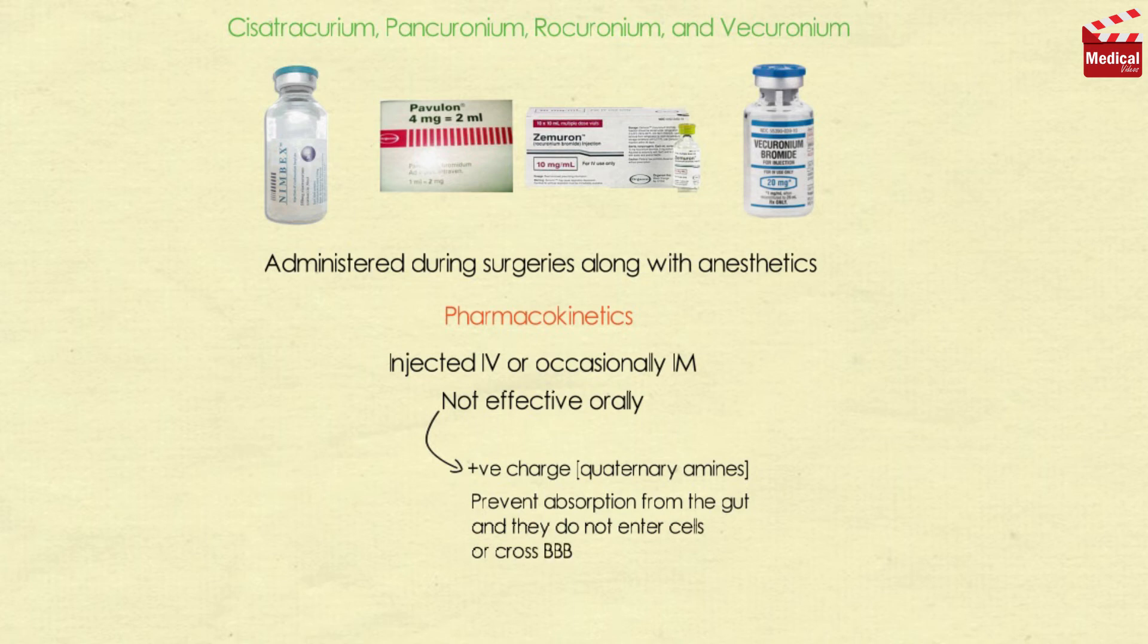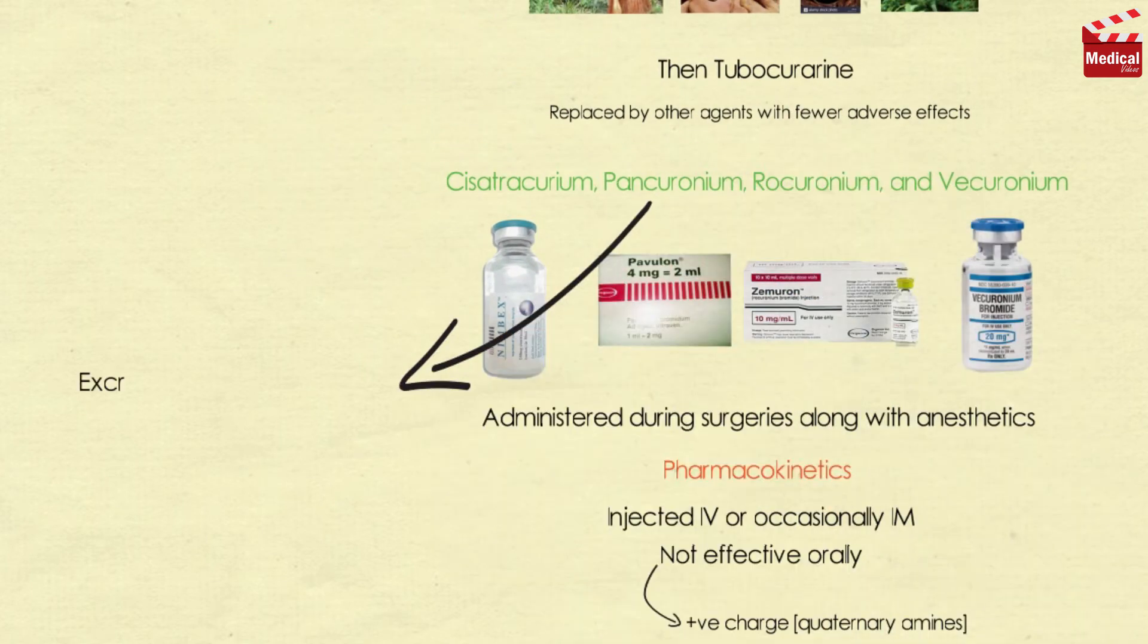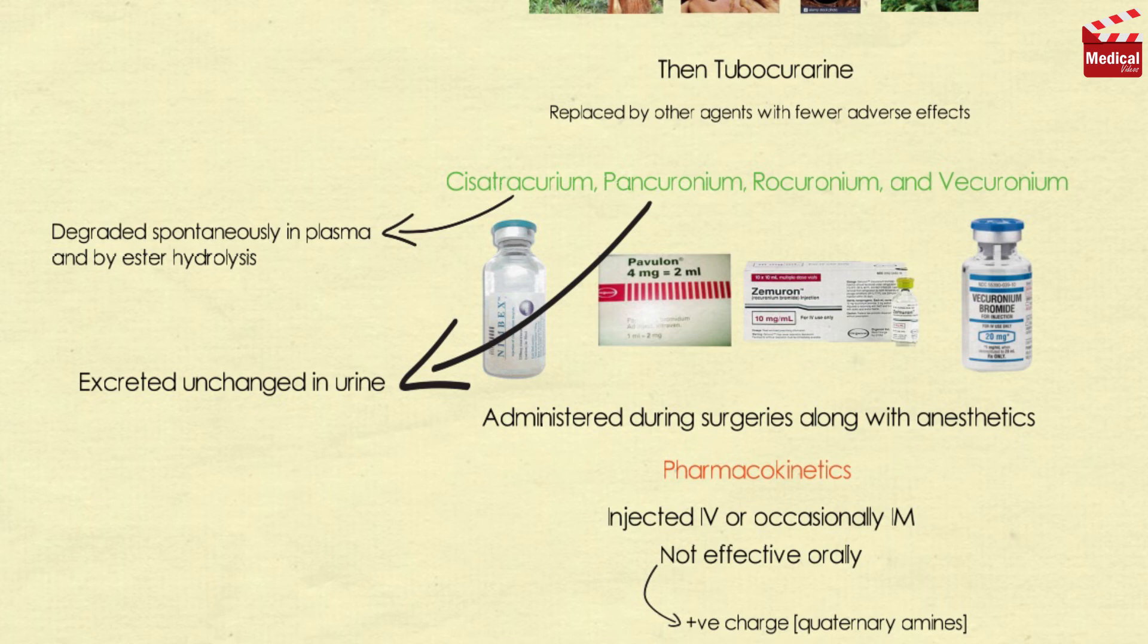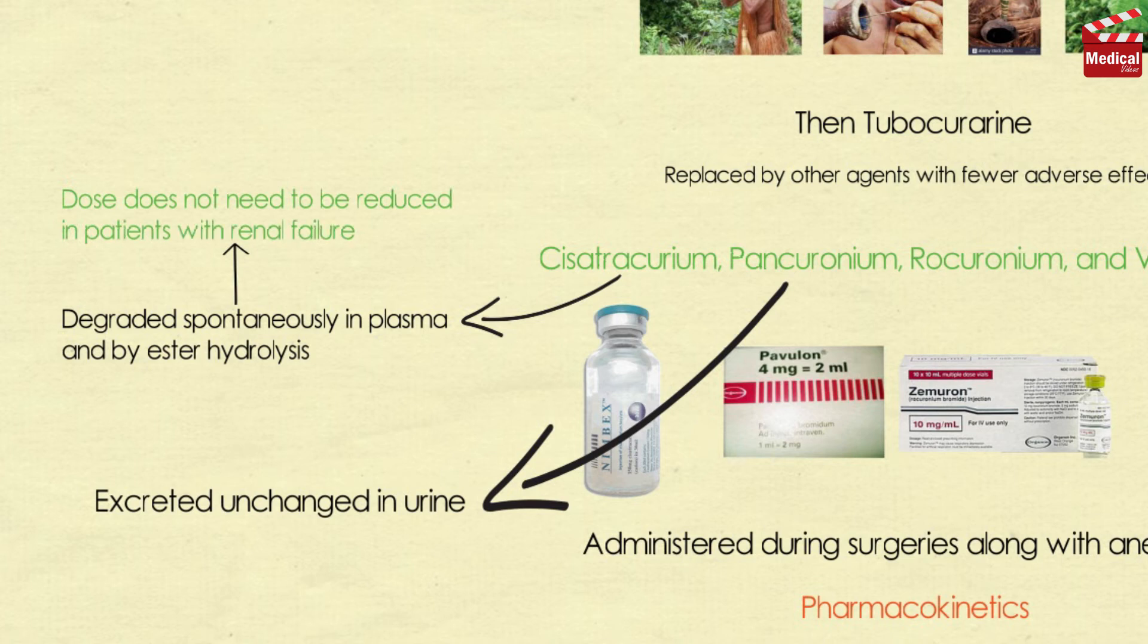They do not enter cells or cross the blood-brain barrier. Pancuronium is excreted unchanged in urine. Cisatracurium is degraded spontaneously in plasma and by ester hydrolysis, so it is the only non-polarizing neuromuscular blocker whose dose does not need to be reduced in patients with renal failure. It is often used in patients with multi-system organ failure.